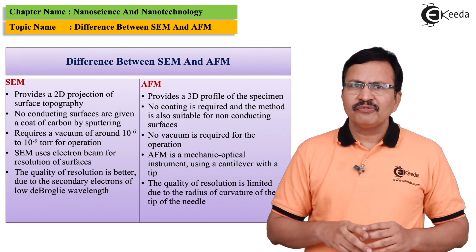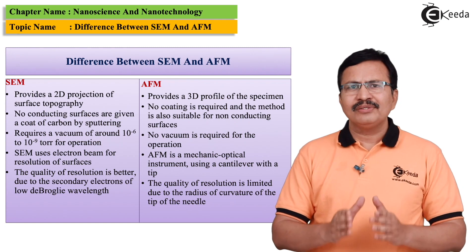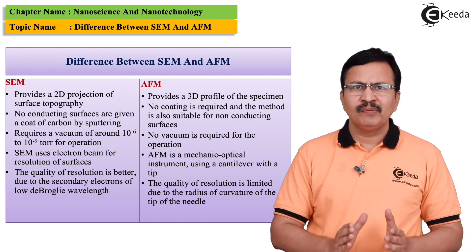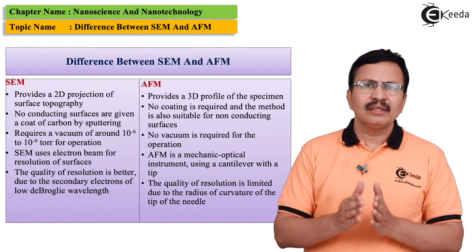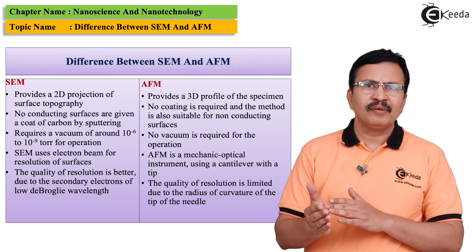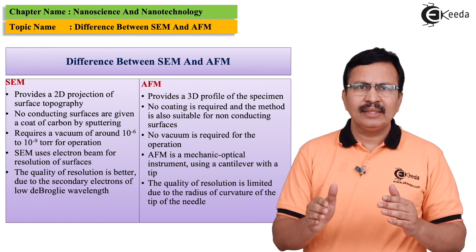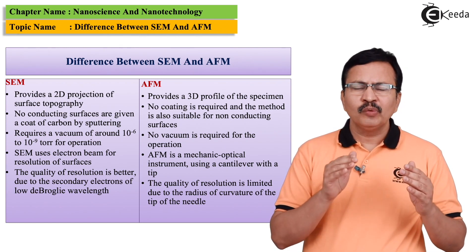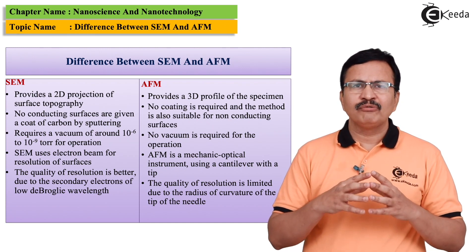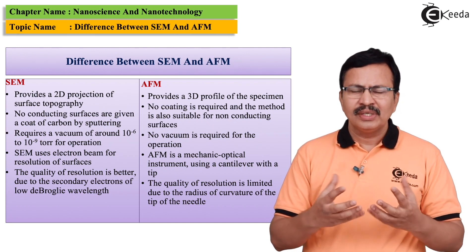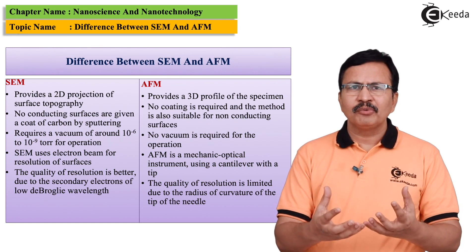In the case of SEM, we utilize electrons for resolving the surface, whereas in the case of AFM we use the signals provided by an optomechanical lever. These signals are picked up by photodiodes and are later generated into a 3D profile.